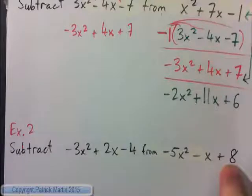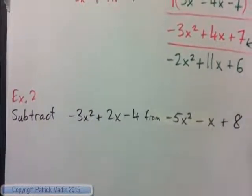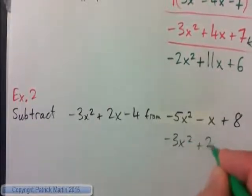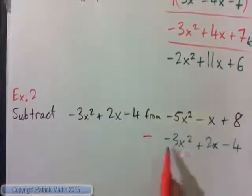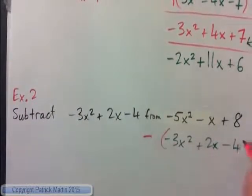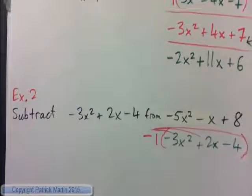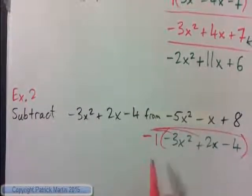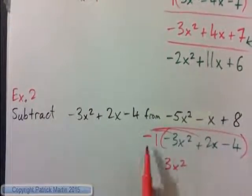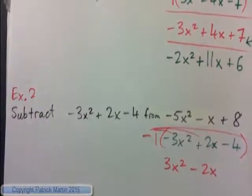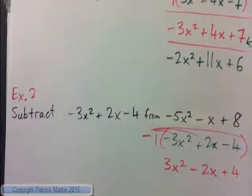I hope you pressed pause and tried it. We're subtracting this from this, so we're starting with negative 5x squared minus x plus 8, and then negative 3x squared plus 2x minus 4 is going to be subtracted. But we can't just subtract the first term — you've got to subtract the whole thing, so you're multiplying it all by negative 1. Negative 1 times negative 3x squared gives positive 3x squared. Negative 1 times positive 2x gives negative 2x. Negative 1 times negative 4 gives positive 4. So we've subtracted it, and then we just combine like terms.